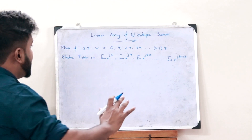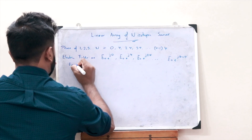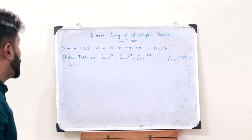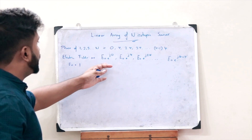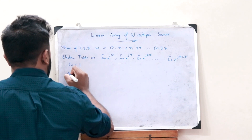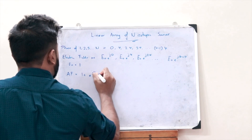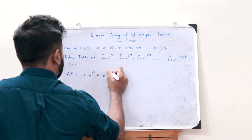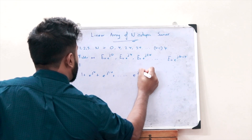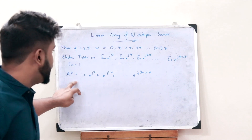Taking e₀ = 1, the antenna factor is obtained as the sum of the total electric fields: AF = 1 + e^(jψ) + e^(j2ψ) + ... + e^(j(n−1)ψ). This is the antenna factor.